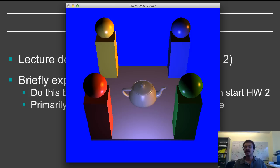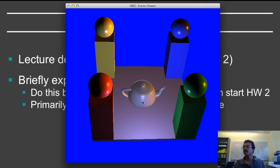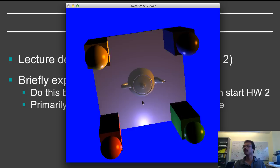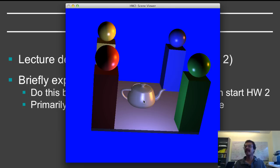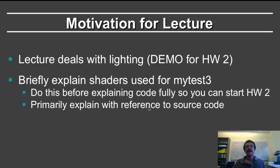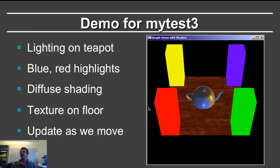I'm showing you the demo for homework 2 here — this is the solution. The idea is that you read a text file that specifies all of the geometry, and then your program will display the scene with the correct shading. Notice that I still have the same functionality from homework 1, which is that I can move about the scene. You'll notice the highlight here that changes as I move the scene to different locations, including red and blue highlights on the teapot and highlights on the spheres.